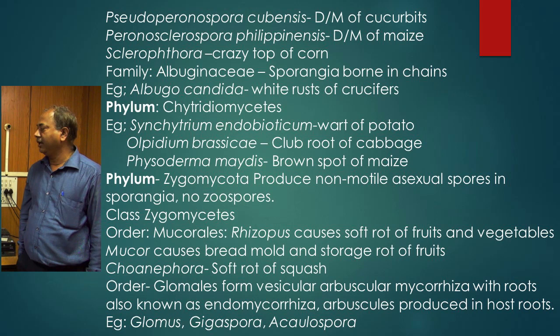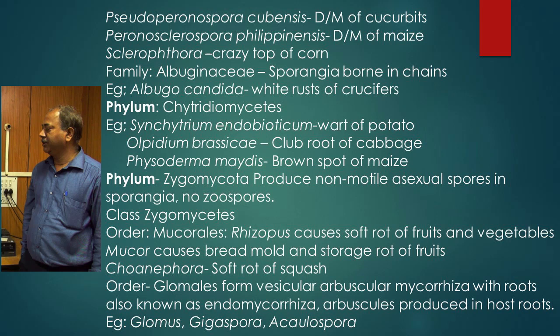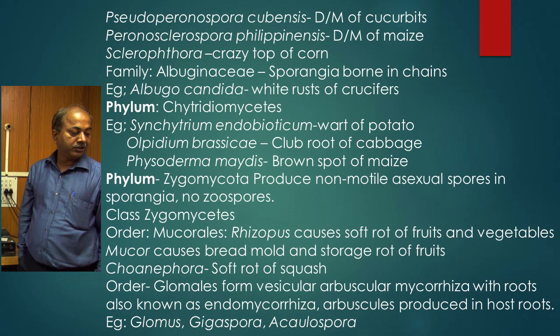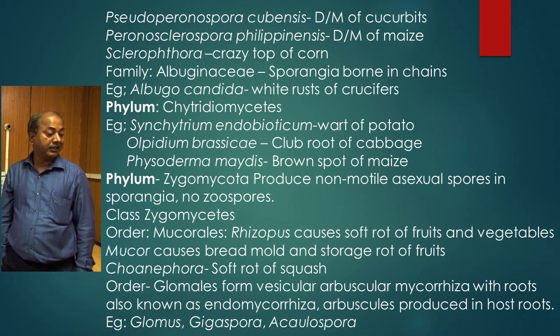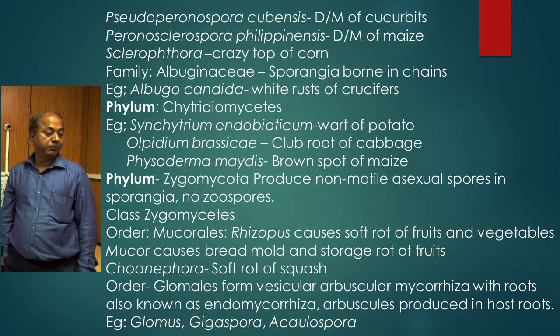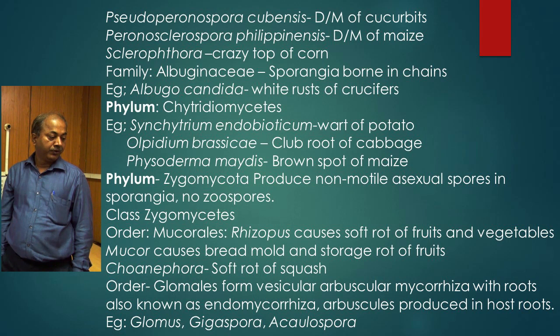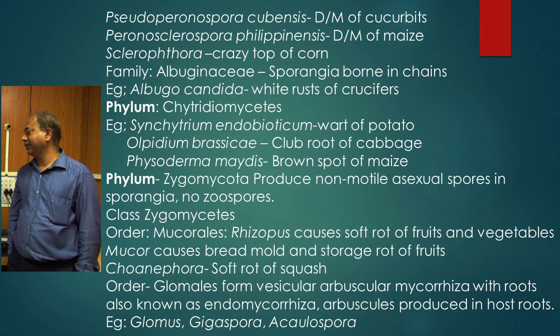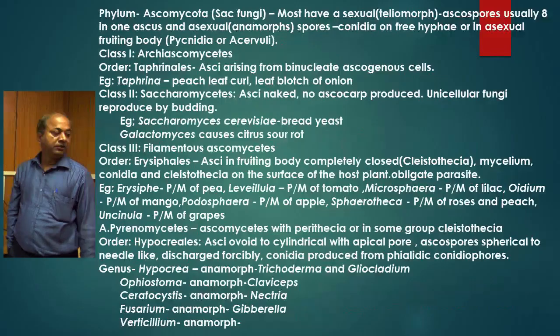It should be borne in mind for examinations that fill-in-the-blanks and multiple choice questions generally come from these parts. Another genus is Cunninghamella, which causes soft rot of squash. In Zygomycetes there are two orders: Mucorales and Glomales. In Glomales, it forms vesicular-arbuscular mycorrhizae with roots of higher plants, known as endomycorrhizae, and arbuscules are produced in the host roots. Glomus, Gigaspora, and Scutellospora are the genera.